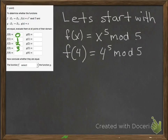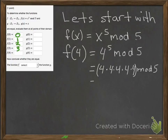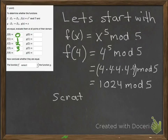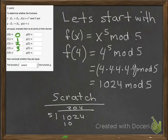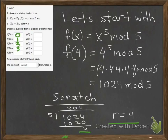We evaluate f of 4: 4 to the fifth mod 5 equals 4 × 4 × 4 × 4 × 4 mod 5, which equals 1024 mod 5. Our scratch work: 5 goes into 1024 two hundred and four times; 5 times 204 is 1020, giving a remainder of 4. So 1024 mod 5 equals 4. We write that in.